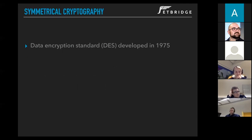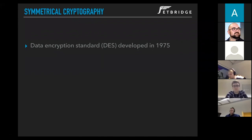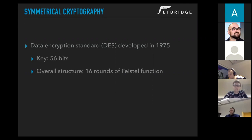Starting with symmetrical cryptography: in the early 1970s, NIST — the National Institute of Standards and Technology in the US — identified a need for a standard for encrypting sensitive information. It turned out that IBM developed such an algorithm, and that became DES, the Data Encryption Standard, in 1975. The input was plaintext and a 56-bit key. The message was cut into blocks to fit the key length, and each block was encrypted separately in 16 rounds of the Feistel function.